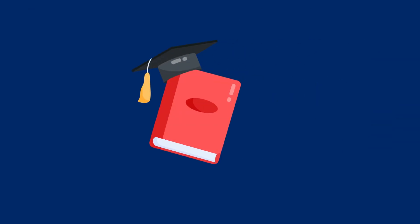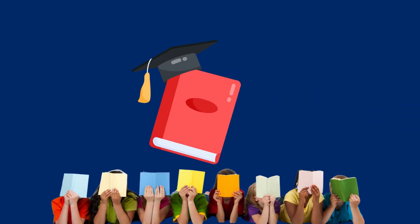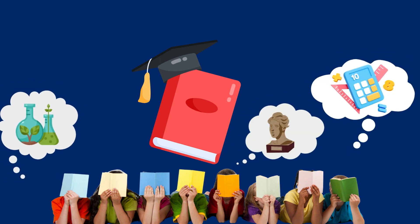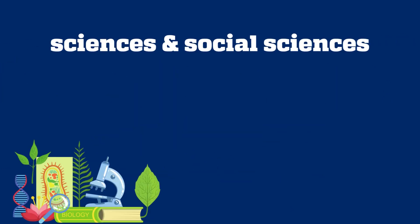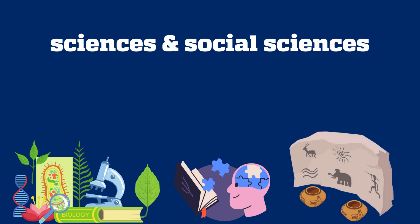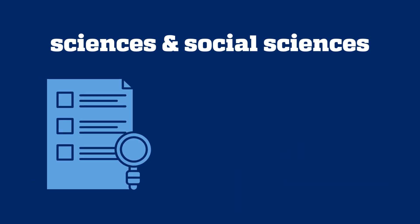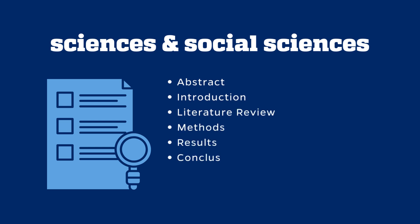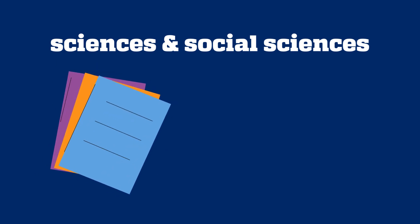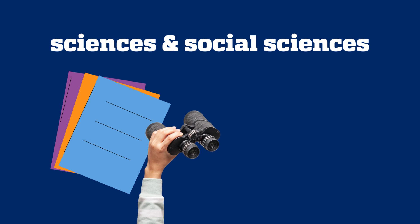Now that you can identify a scholarly article, let's get some tips on how to read them. There are lots of different types of scholarly articles, and they may read differently depending on the field. Articles in the sciences and social sciences like biology, psychology, and anthropology, for example, typically follow a fairly consistent structure. They often have different sections like an abstract, introduction, literature review, methods, results, conclusion, and references. Not all articles in these fields will have these sections, but they are a good example of what you might see.